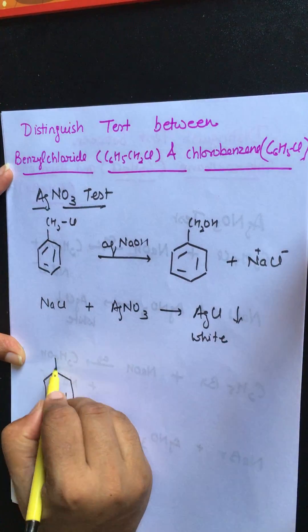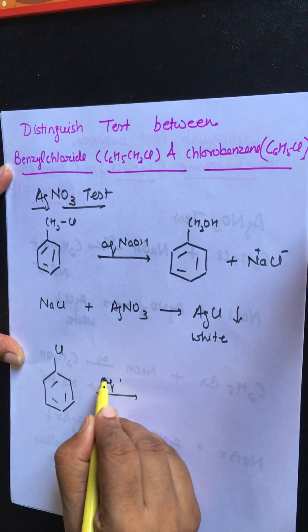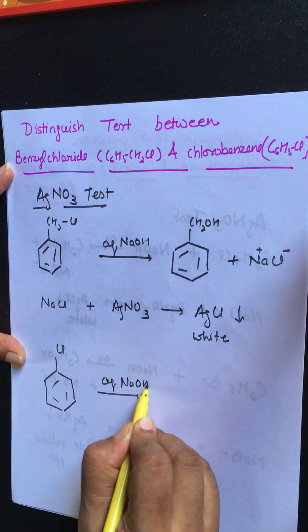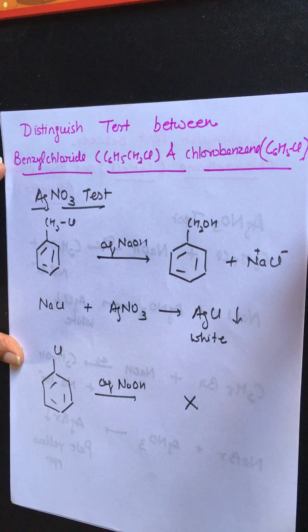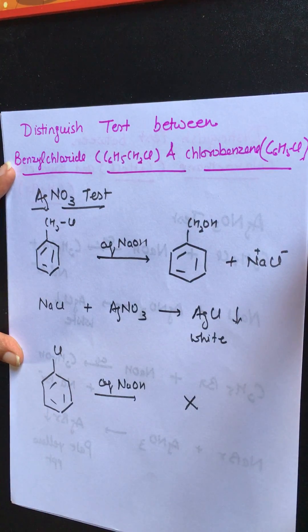While chlorobenzene in presence of aqueous alkali does not give substitution reaction, it means it further does not give AgNO3 test.